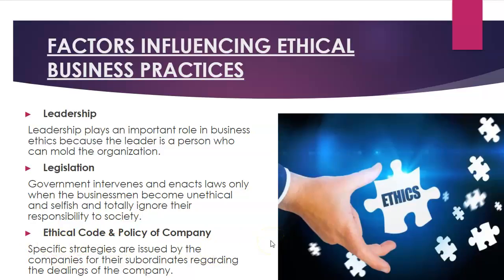The third factor is the ethical code and policy of a company — very important. Specific strategies are issued by companies for their subordinates regarding the dealings of the company. This is related to leadership. CEOs, HR departments, and leadership issue these strategies so subordinates know how to deal — they are not supposed to indulge in malpractice, theft, lies, or dishonest behavior. This ensures subordinates know their boundaries and how the company operates, and when they eventually reach leadership positions, they carry this legacy forward.